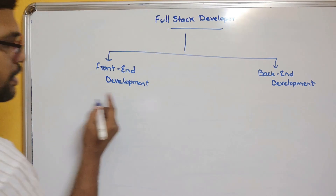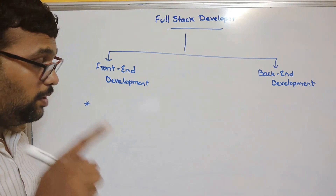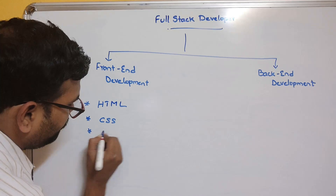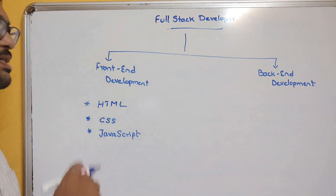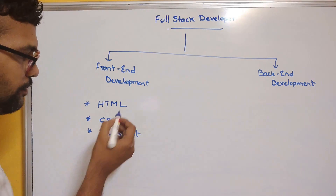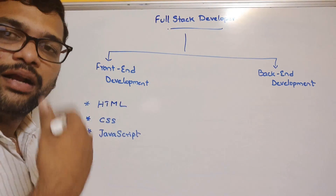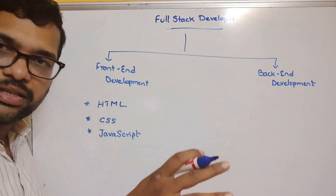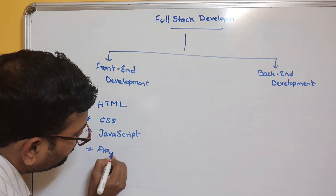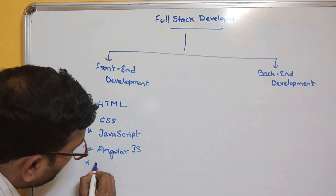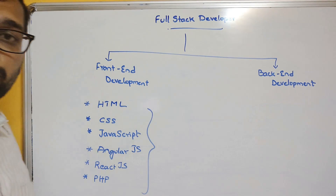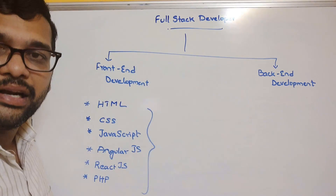The technologies used for front-end applications are mainly HTML, CSS, and JavaScript. These three are the main things you need to learn for front-end development to create user interfaces. HTML is for static pages, CSS for beautification of elements on the screen, and JavaScript for creating dynamic pages. Apart from these, you also need to learn Angular, AngularJS, ReactJS, and PHP — all of these come under front-end development.